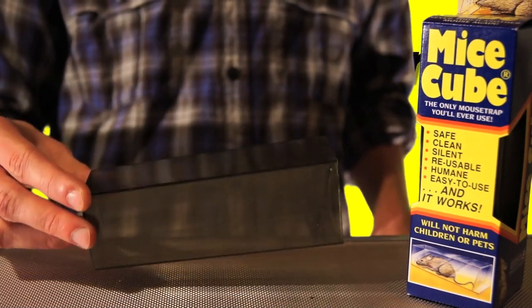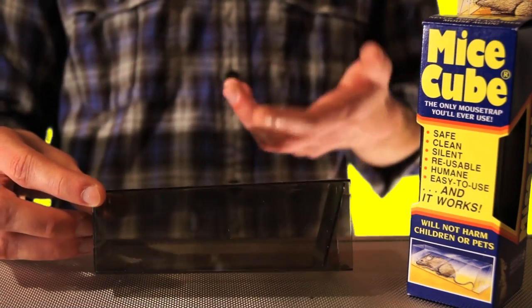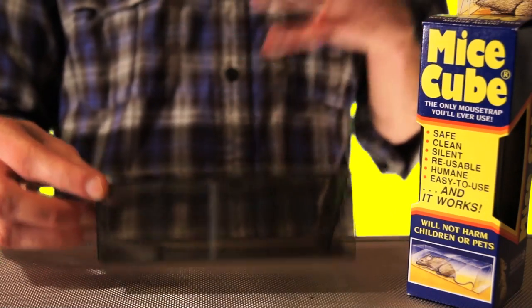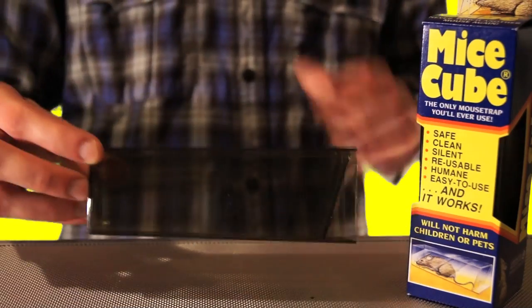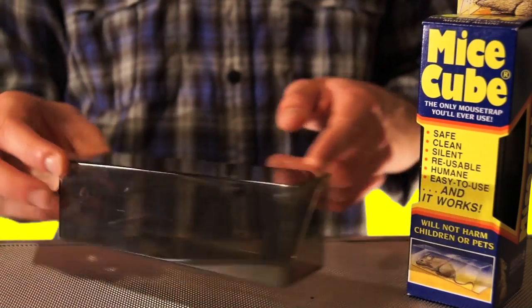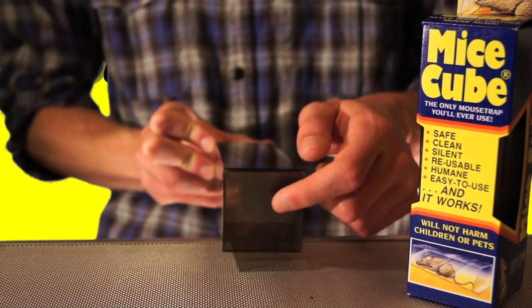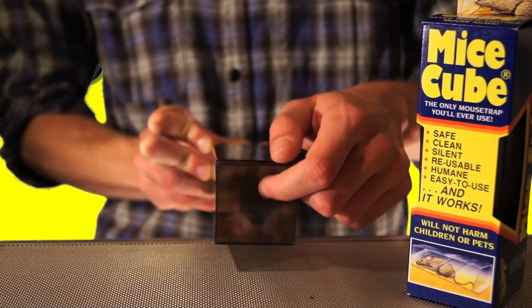So basically just what it says it is: it's a clear box, which I like because you should be able to see the mouse, so you don't have to try and pick it up and feel, 'oh, is there a light mouse? Do I feel it in there or not?' You can just see. And the way it works is it's just got this really simple little baffle door right here. The mouse can go in but it can't get back out.